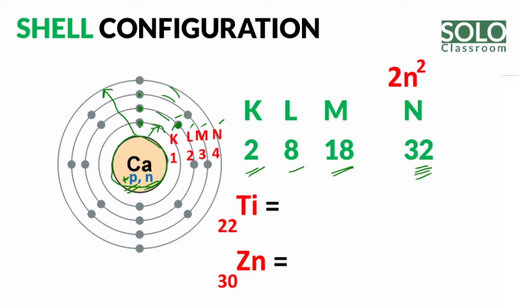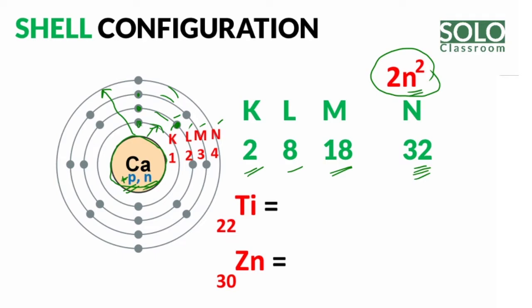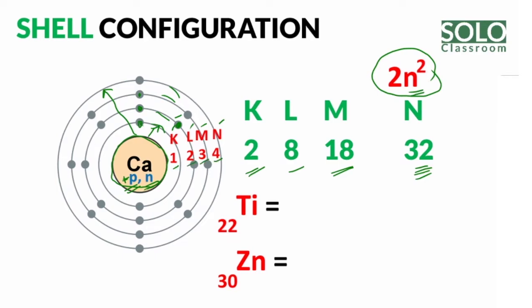If you are interested in the short form formula, for any shell n, the maximum number of electrons is 2n². For example, if n equals 3, then 3 squared is 9, and 2 times 9 is equal to 18.